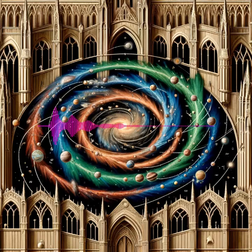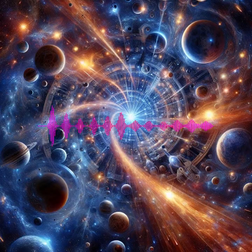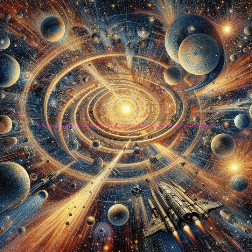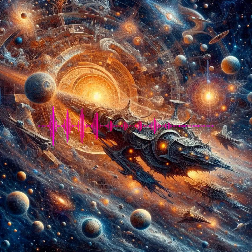Dynamical Friction. When stars and other massive objects cruise through a galaxy, they interact gravitationally with their environment. This interaction, known as dynamical friction, causes them to lose momentum, altering their orbits gradually. It's like walking through a crowd — the more dense the crowd, the more you slow down.